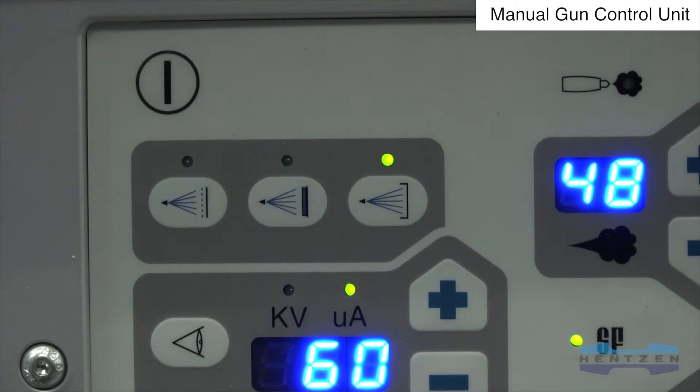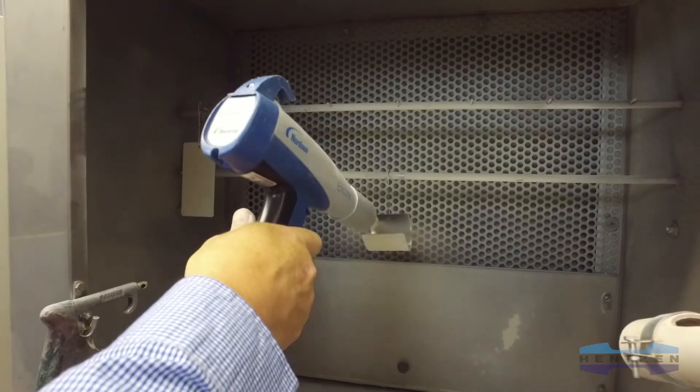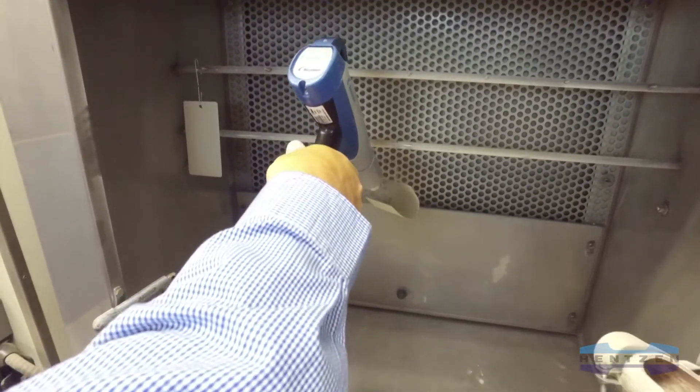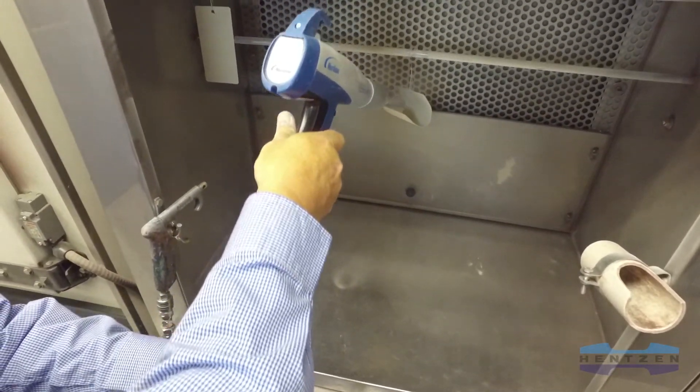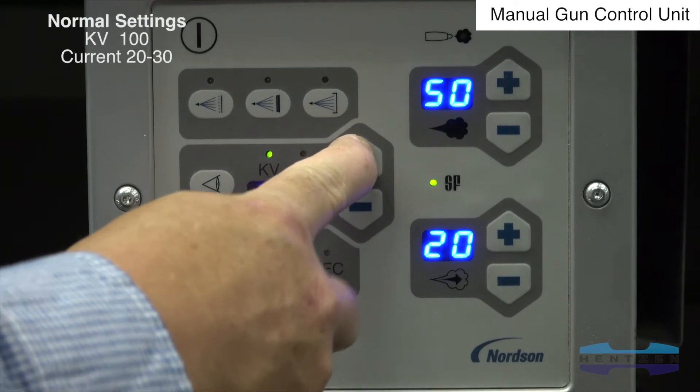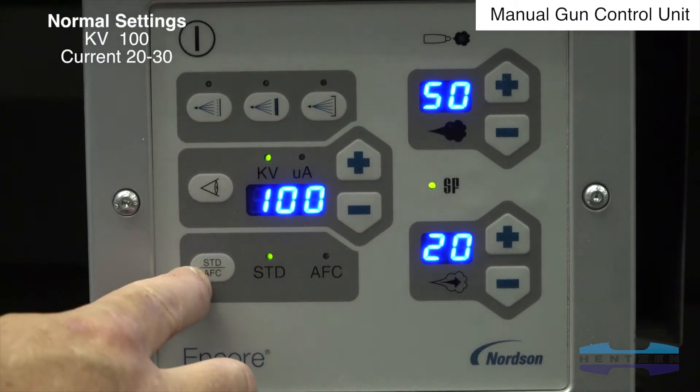It is the optimal way to achieve high transfer efficiency while working closely to the substrate in an effort to overcome the Faraday cage effect. For first pass coating of complex parts, KV should be set to maximum with the current limited to approximately 20 to 30 microamps.